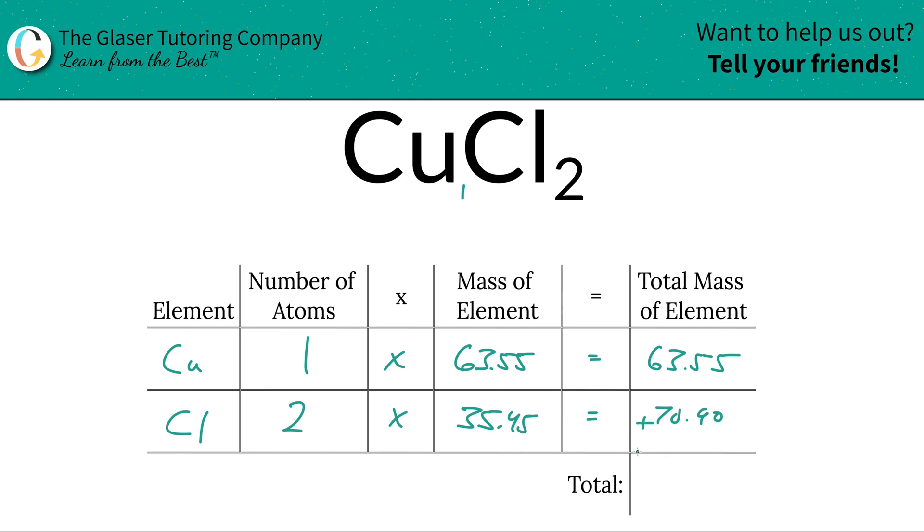And then to find the total mass of the compound, so simple now just add these two values together. And it works out to be 134.45. And since we're solving for molecular mass, units here are in AMU, or AKA atomic mass units.